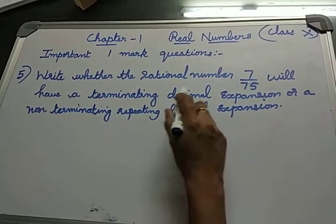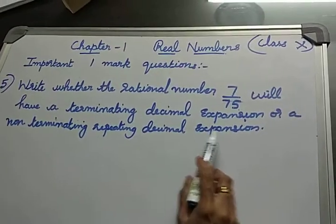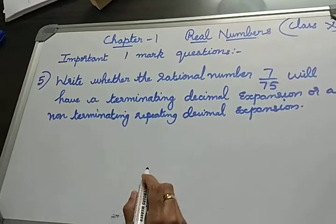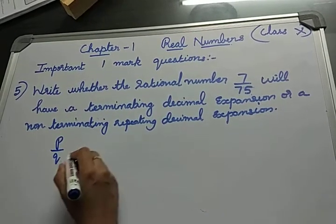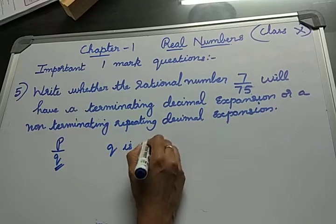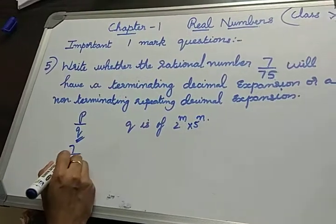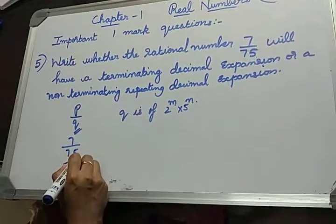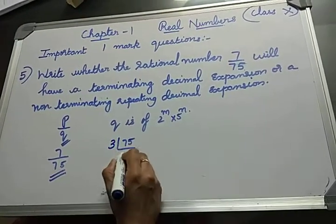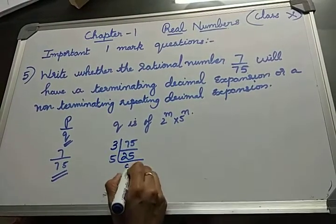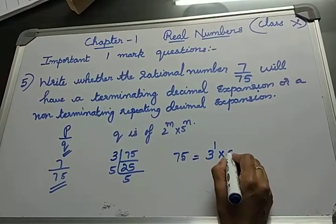Question 5: Write whether the rational number 7/75 will have a terminating or non-terminating repeating decimal expansion. Any rational number P/Q has a terminating decimal expansion if the denominator Q is of the form 2^M × 5^N. Our rational number is 7/75. Let's factorize 75: it goes in 3, 25, 5. The denominator 75 is 3¹ × 5².